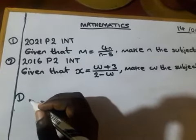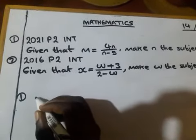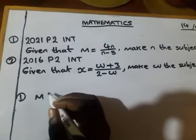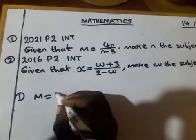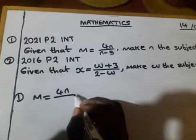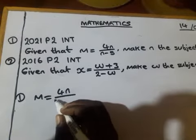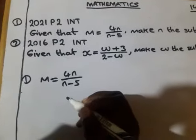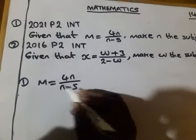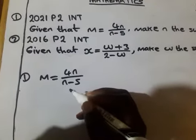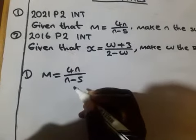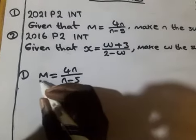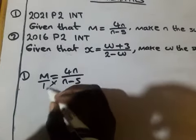Now you have to copy this equation: m equals 4n over n minus 5. In this equation, they want us to make n subject of the equation. You have to balance up the equation by introducing denominator 1, then you cross multiply.